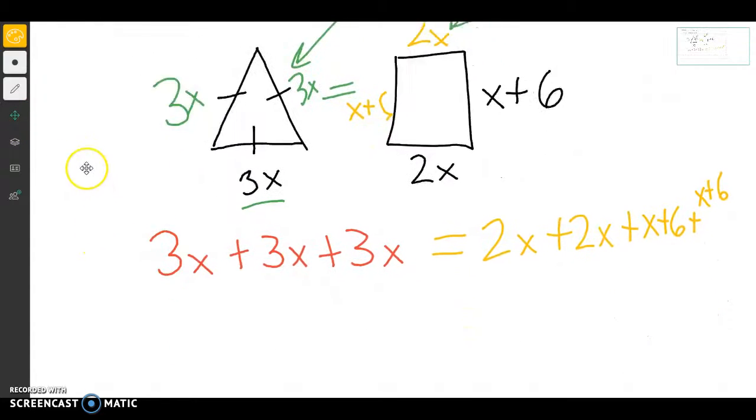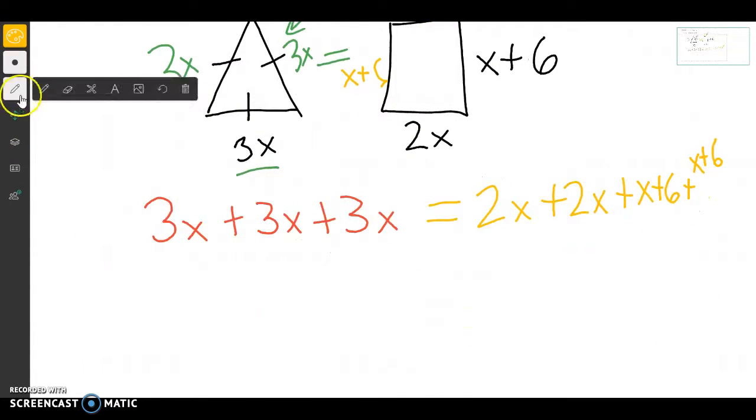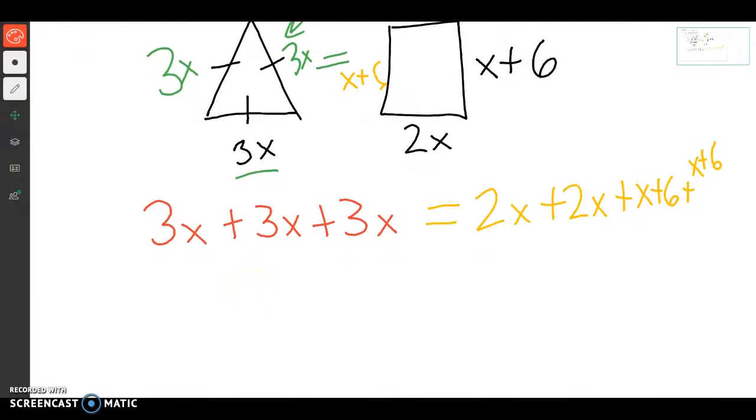So let's move this down and start combining stuff. So I can see on this side, I'm going to have 9x, because 3x plus 3x plus 3x equals 9x. On this other side, I'm going to have 2x plus 2x plus 2x plus x plus x. So that's 4, 5, 6x's plus 12.